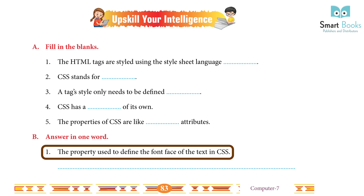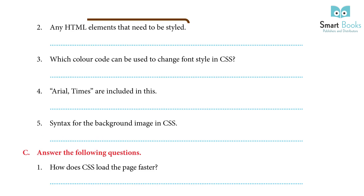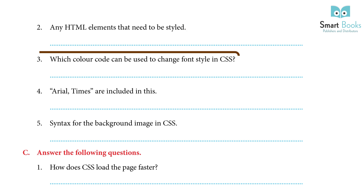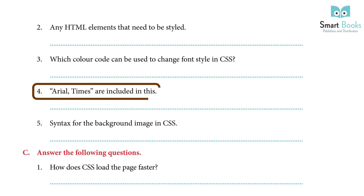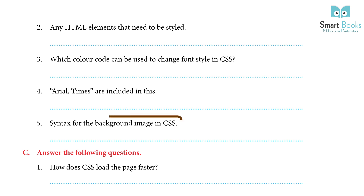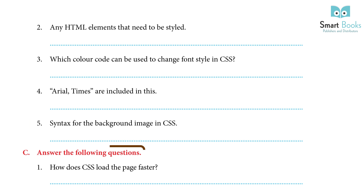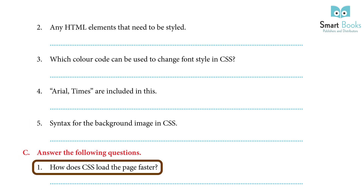Answer in one word: 1. The property used to define the font face of text in CSS — Answer: CSS font-face. 2. Any HTML element that needs to be styled — Answer: selector. 3. Which color code can be used to change font style in CSS — Answer: RGB color code. 4. Arial, Times are included in this — Answer: CSS font-face family name. 5. Syntax for background images in CSS — Answer: background-image URL(image name).